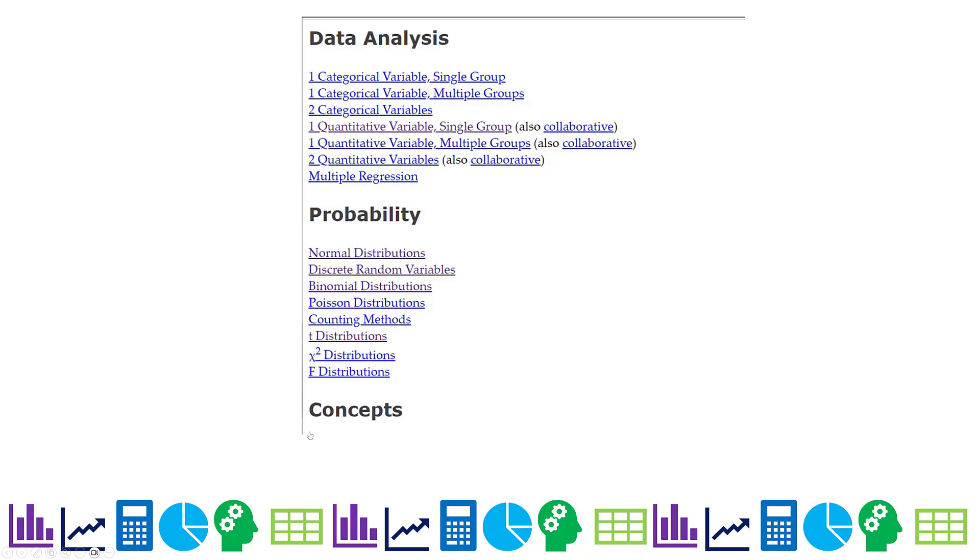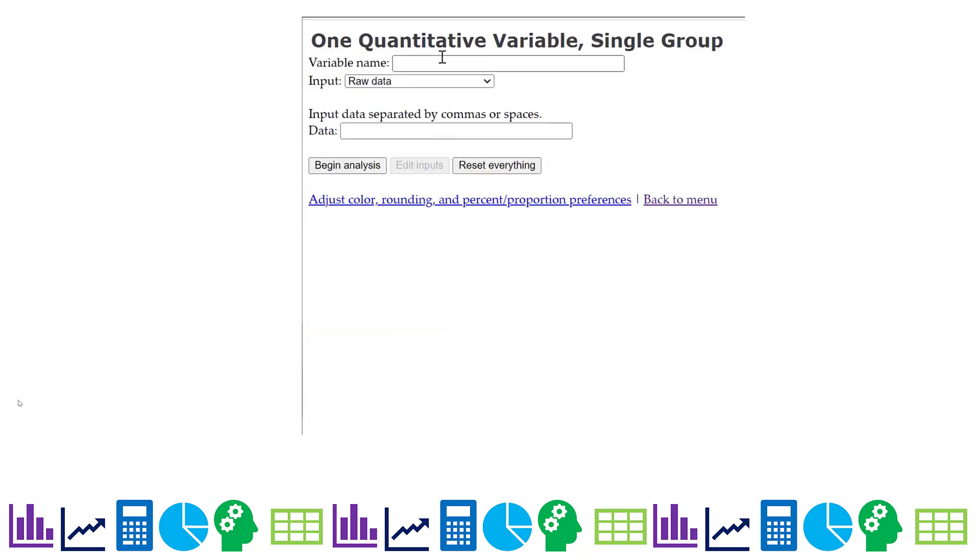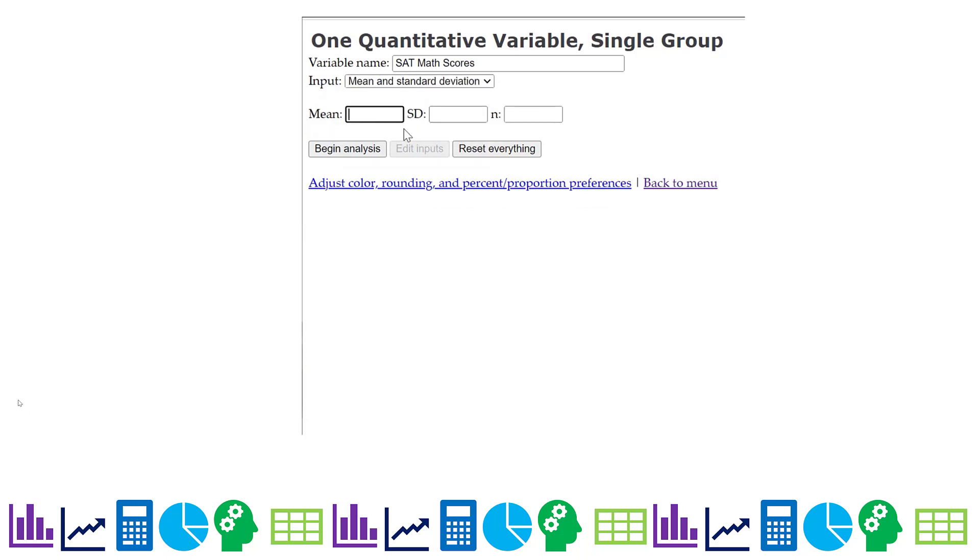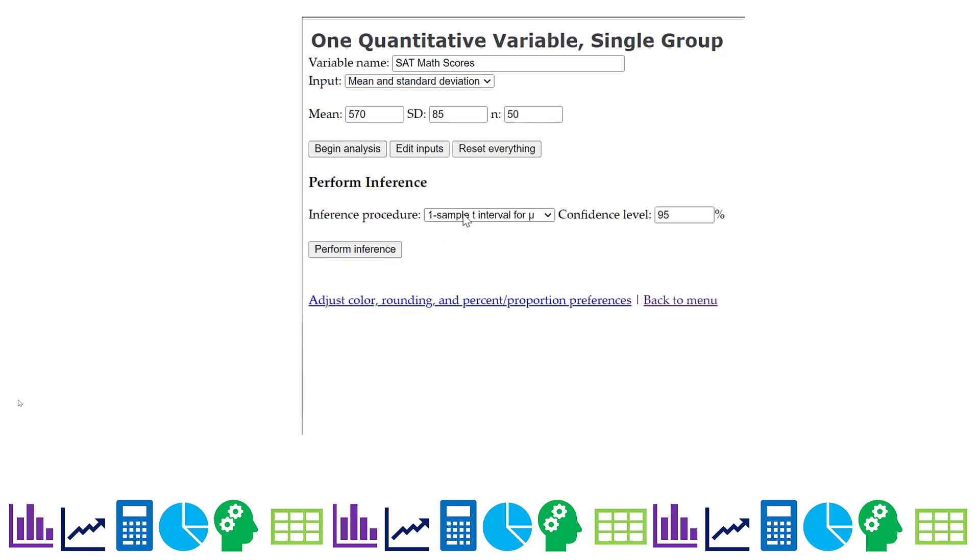So we'll do a quick run through. You can use the staplet directly to calculate your confidence interval without having to do critical T values. I'm going to hit one quantitative variable single group and my variable name is SAT math scores. I can just say mean and standard deviation. Put in the mean 570, 85, and 50. Begin analysis, do a one sample T interval. Normally our confidence intervals are 95%, but in this case we're doing 99%. So I'll go ahead and do that and boom, there is your interval.